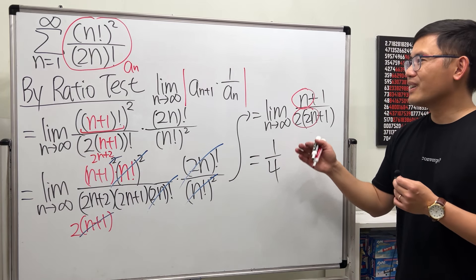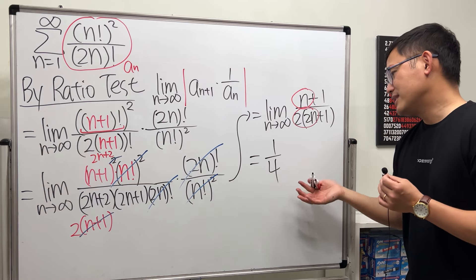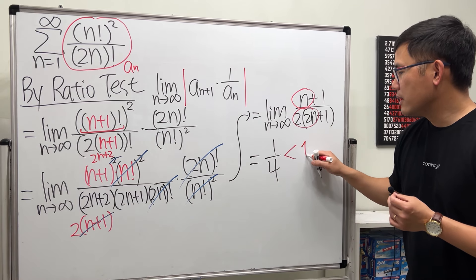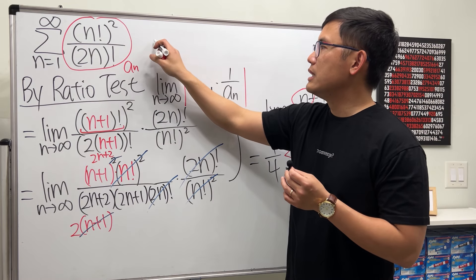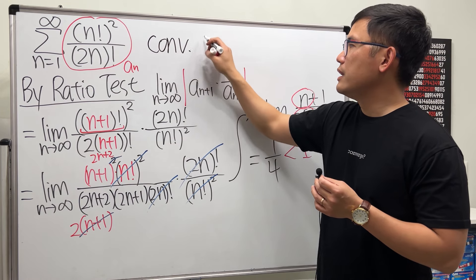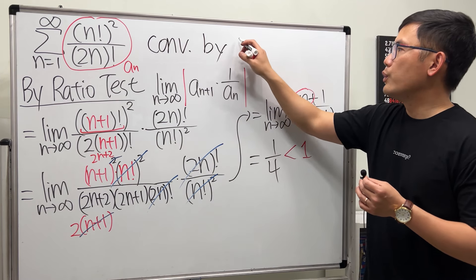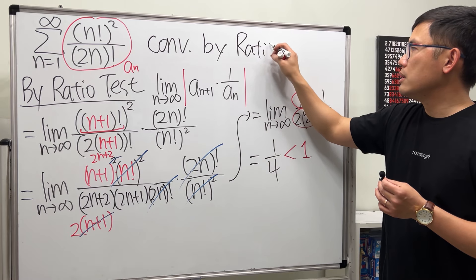Thankfully, we do have a limit, and this limit is less than 1. Therefore, we can conclude that this series converges, and that's by the ratio test.